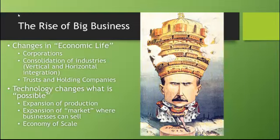When we talk about how businesses changed during this time, we have to talk about the rise of big business. Big business came about through changes in economic life: the creation of the corporation, the consolidation of industries, and the invention of trusts and holding companies — all of which changed what was possible about owning a business, where it's now possible to own and operate a large billion-dollar enterprise fairly easily. Technology also changed what was possible: expansion of production means you can create millions of products, expansion of the market means you can sell those products almost anywhere.